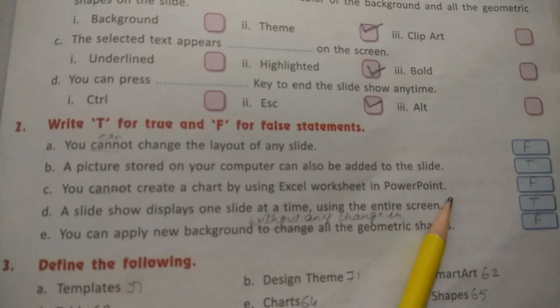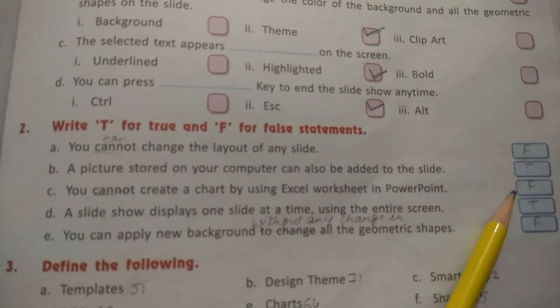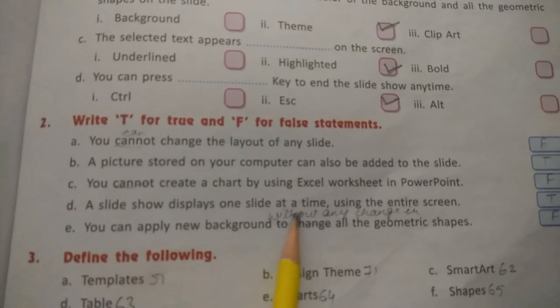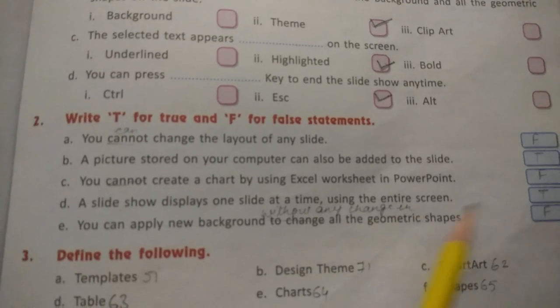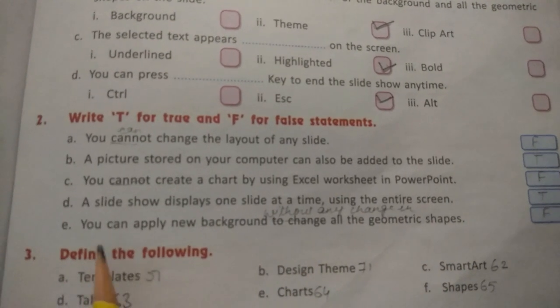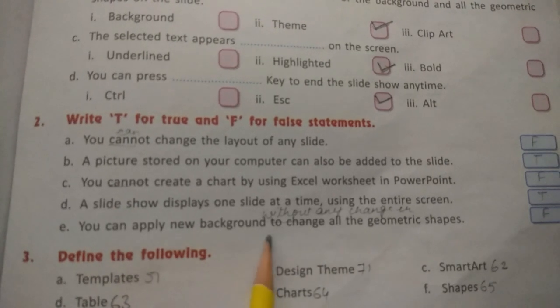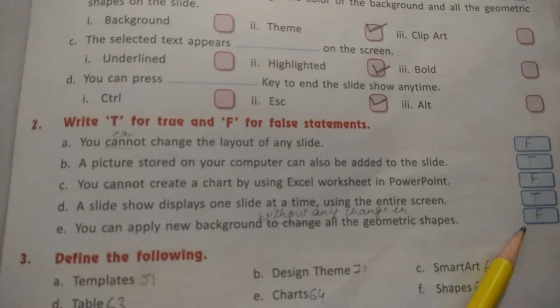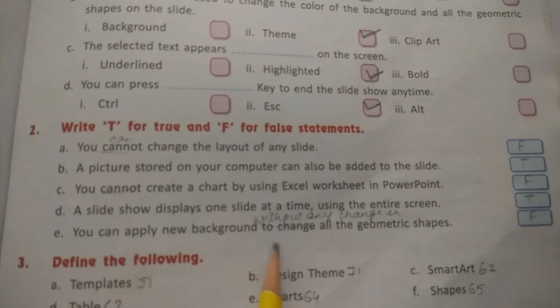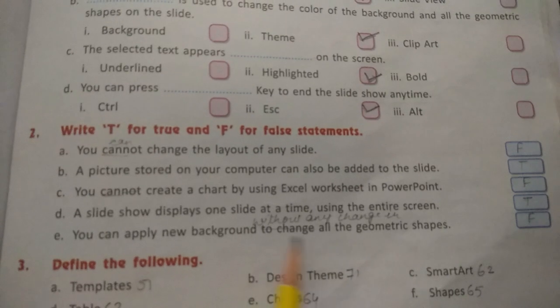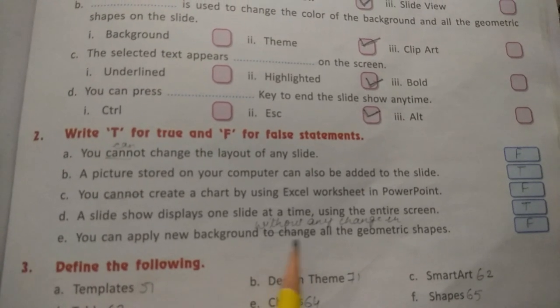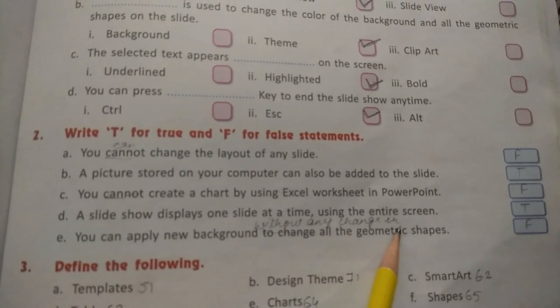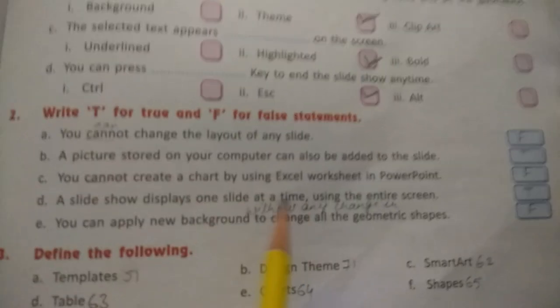A slide should display one slide at a time using the entire screen - write down T, true. You can apply new background to change all the geometric shapes - write down F. For the true statement, underline 'to change' and instead write 'without any change in'. I can repeat: without any change in.